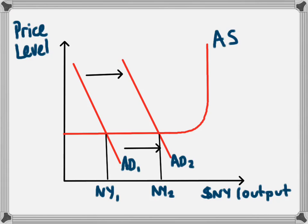If aggregate demand moves from AD2 up to AD3, however, we'll make AD3 here, then we are going to have two things happening. The first thing is that national income will increase and we'll go from NY2 and we'll call this one NY3.